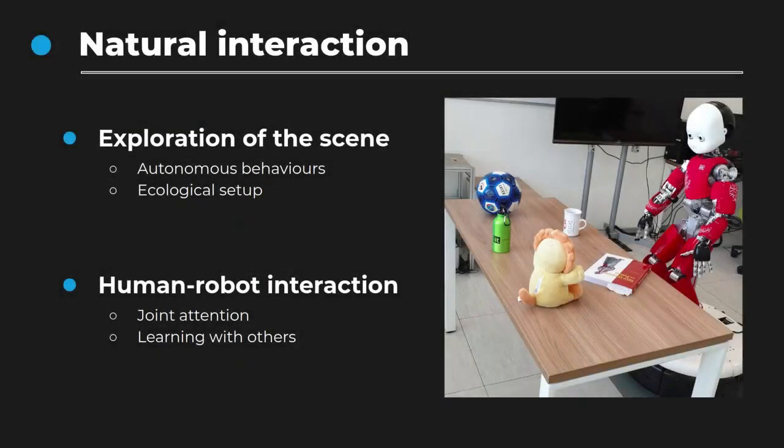We tested our computational framework in a natural and ecological interaction, where the iCub robot is in front of objects randomly disposed on a table while interacting with a human partner. Using our framework, the robot can autonomously explore the set of objects displayed, collecting meaningful data that can be used to train a deep network for object localization.